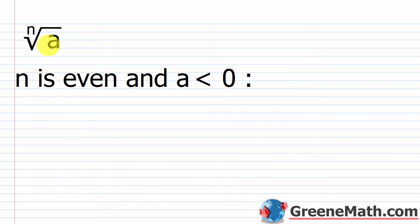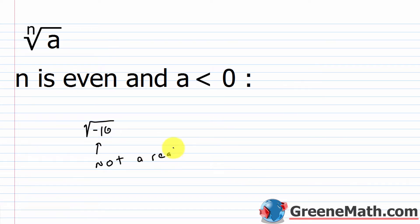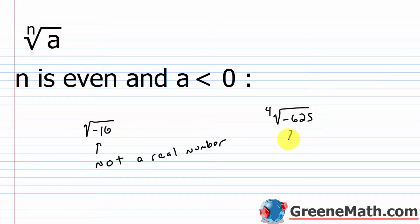The next scenario: if n is even and a is less than zero — meaning the radicand is negative — the result is not a real number. For instance, the square root of negative 16 is not a real number; we'll learn to handle this using imaginary numbers later in Algebra 2, but for now we say it's not real. Similarly, the fourth root of negative 625 is not a real number because the index is even and the radicand is negative.